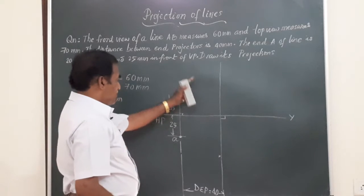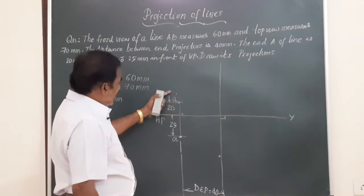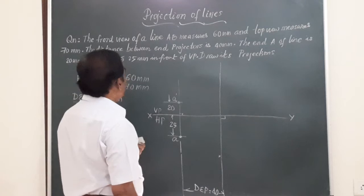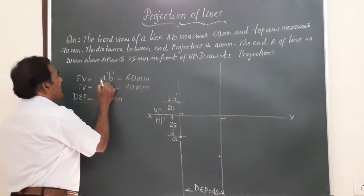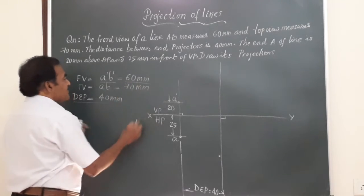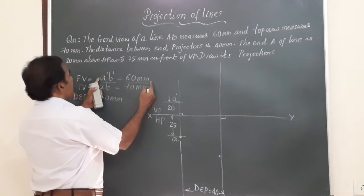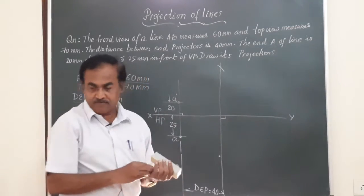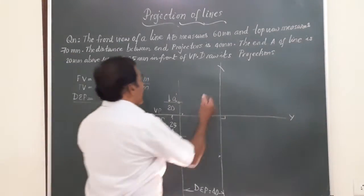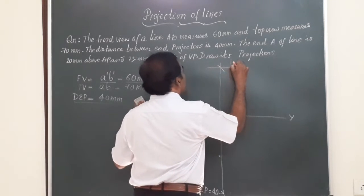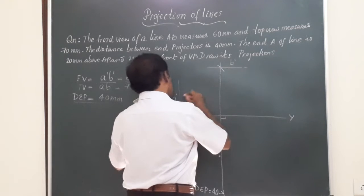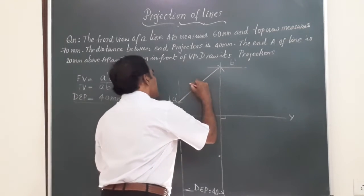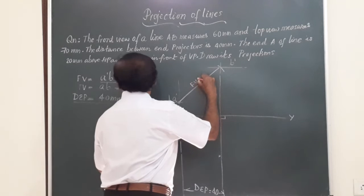The distance between the end projectors A'a and B'b is equal to 40 mm, and this distance is always measured parallel to the XY line. So I have got the end projector on which the point should lie. A'a lies on the first end projector. Likewise, B' and b should lie on the second end projector. Now, the front view is A'B' measuring 60 mm. Taking A' as center and radius equal to A'B', I draw an arc and I represent this intersection as point B'. This A'B' is the front view of the line, equal to 60 mm.